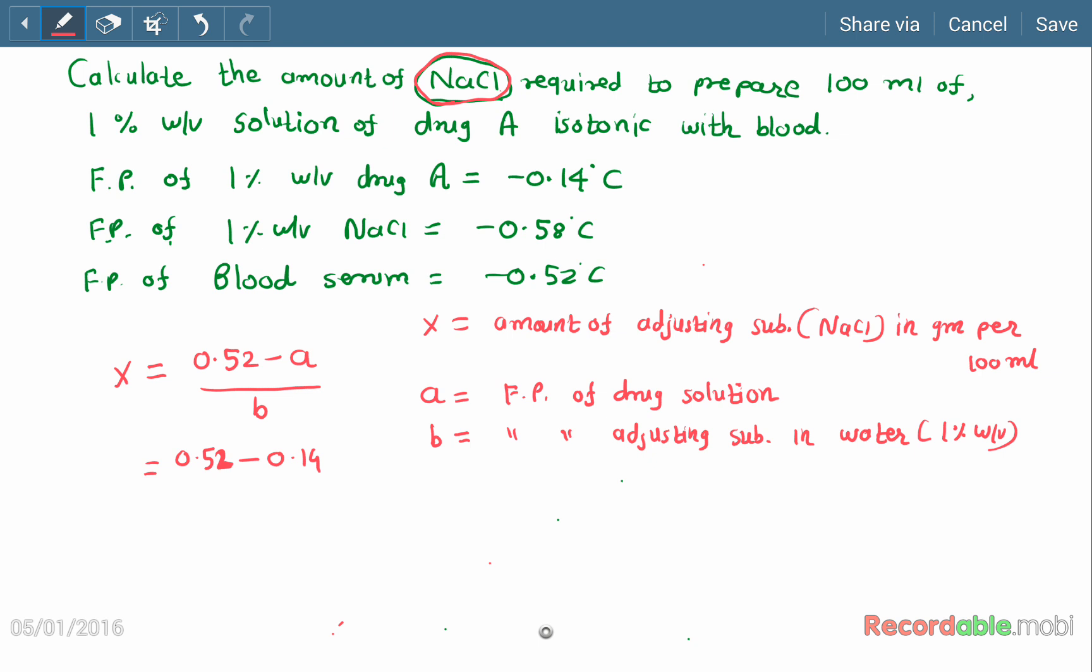If we put all the minus values, the equation will be x = -0.52 - (-a) divided by -b. This minus is common and below there is a minus, so this will be nullified, so the final answer would become 0.52 - a divided by b. That's why we are not putting minus values in the equation.